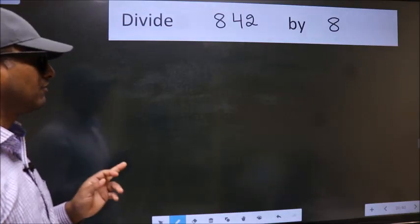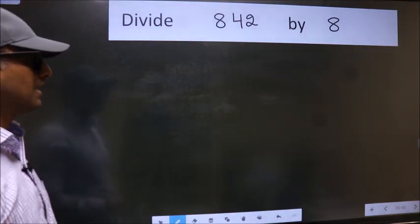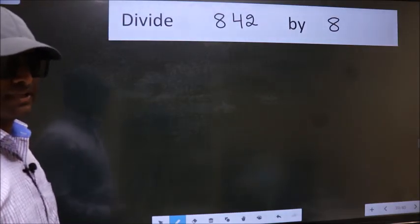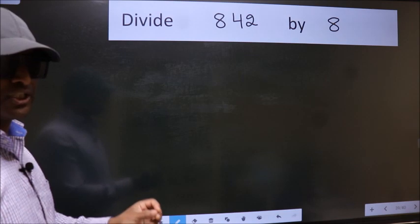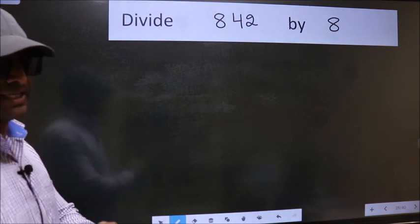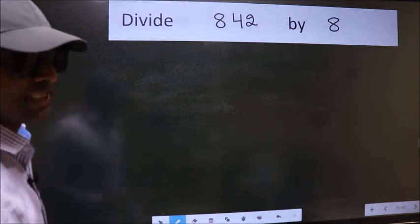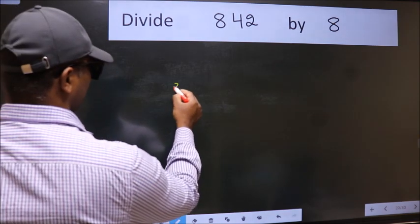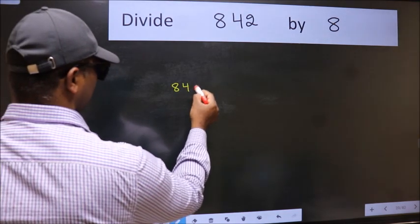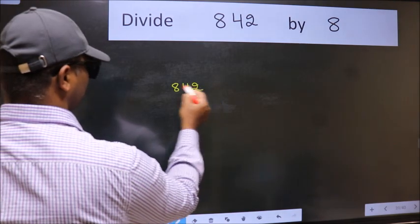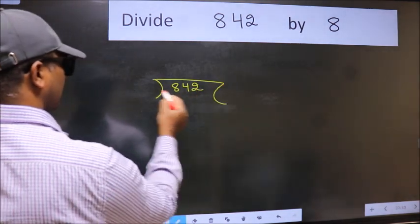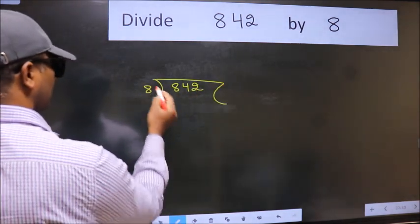Divide 842 by 8. To do this division, we should frame it in this way: 842 here, 8 here.